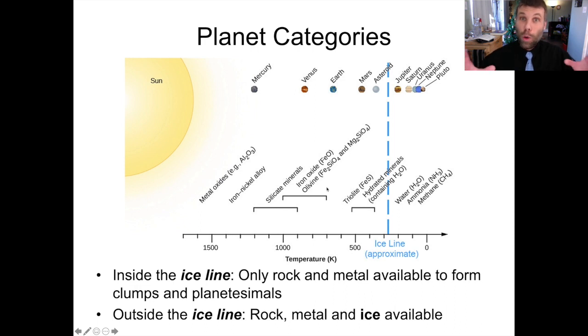Inside the ice line, so closer to the Sun than the ice line, the only materials that are available to form clumps and planetesimals are rock and metal. And as a result, the planets that form inside the ice line are made of rock and metal, which is not really surprising. So we get terrestrial protoplanets. We get rocky planets.